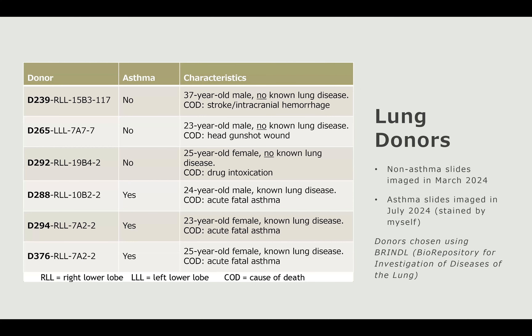Here are some of the donors I used. I chose six donors total — three were non-asthma lung donors (donors 239, 265, and 292) and three had asthma (donors 288, 294, and 376). One thing to note is that all the asthma donors died from asthma, so they had acute fatal asthma — extreme cases, which will show up later in the slides. The donors were chosen using BRINDLE, the Biorepository for Investigation of Diseases of the Lung, which is a data bank for lung donors and their demographics and characteristics. All donors were adults between 23 and 37 years old, so within a similar demographic.